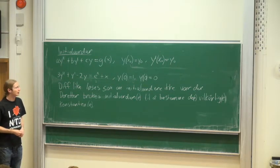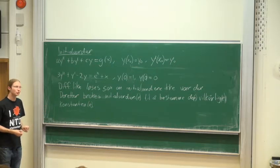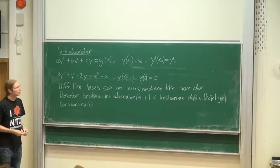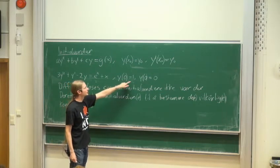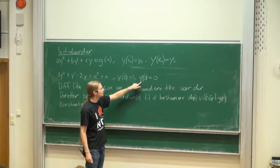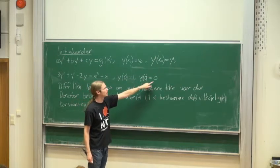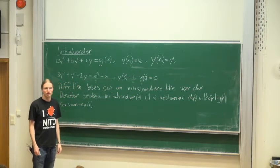Jeg har eksempler, men jeg kan ikke regne eksempler på alt, så jeg hopper over dette. Det som er nytt er at man får én ligning med én ukjent, eller to ligninger med to ukjente. Man finner y-en, setter inn 0 for x og 1 for y – da har vi én ligning. Man deriverer, setter inn 0 i den deriverte og 0 for y – da har man én ligning til. Vi får to ligninger og to ukjente, så løser man dem.